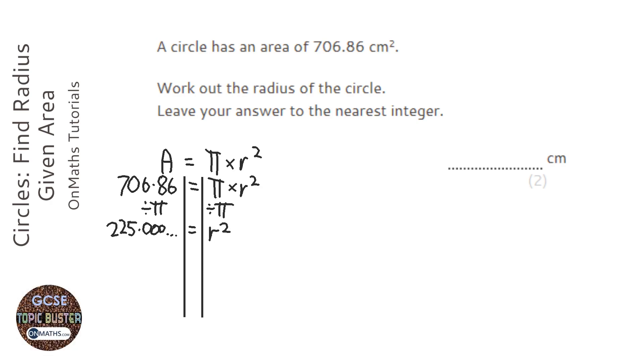Now to get rid of the squared we need to square root both sides. So I'm going to square root answer. And it gives me 15.000 and so on. And that's r.